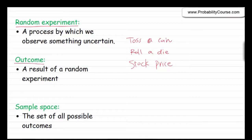An outcome is a result of a random experiment. For example, when you toss a coin, an outcome might be heads or tails. Or when you roll a die, one outcome could be 4. Or when you are observing a stock price, your outcome might be a real number, like $53.2 or something like that.